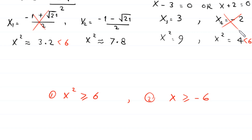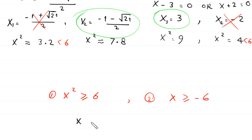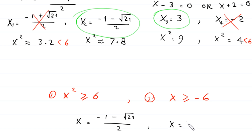We are left with two valid solutions: x equals 3, where x squared equals 9 which satisfies x squared ≥ 6, and x equals negative 1 minus root 21 over 2. These are the two solutions for this equation.